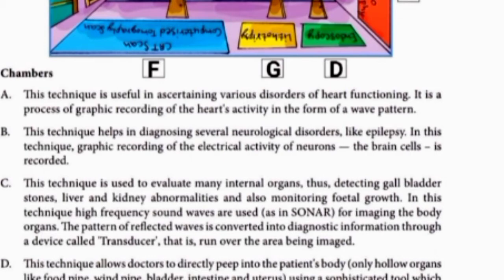Next technique helps in diagnosing several neurological disorders like epilepsy. In this technique, the graphic recording of the electrical activity of neurons — brain cells — is recorded. When nerve cells pass signals, the brain cell activity gets recorded. Neurological disorders like epilepsy (mirgi) are detected using this technique. This is known as EEG — Electroencephalography.